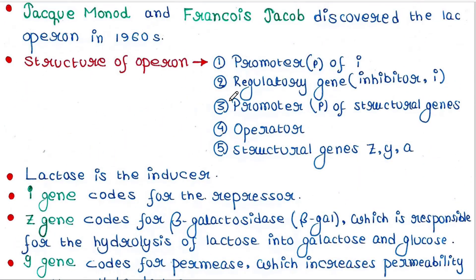So here we have the structure of the operon: promoter of i, then the regulatory inhibitor gene i, then the promoter of structural genes, then the operator, and then structural genes Z, Y, and A. One more thing to know here is that lactose is used as the inducer in this case.